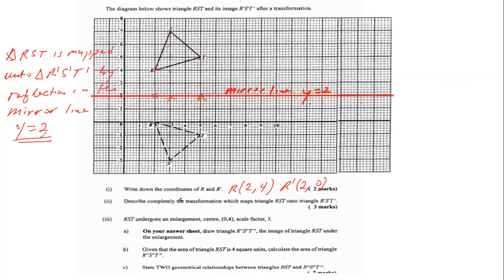To get a full mark, you need to describe completely the transformation that maps RST onto R'S'T'. So RST would be what? Reflection in the mirror line y equals two.